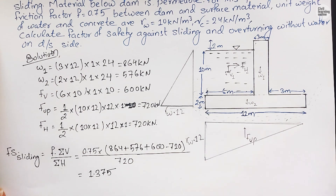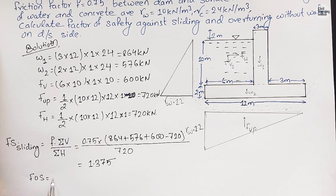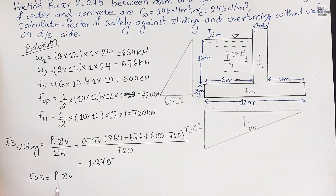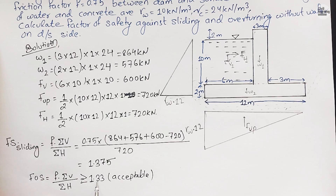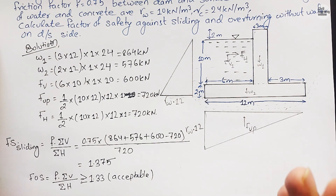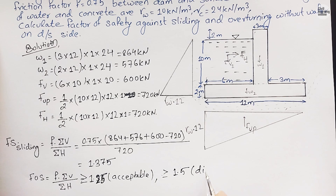Solving gives FS_sliding = 1.375. The code requires FS_sliding ≥ 1.33 to be acceptable and ≥ 2 to be desirable. Since 1.375 > 1.33, the dam is in an acceptable safe condition for sliding.